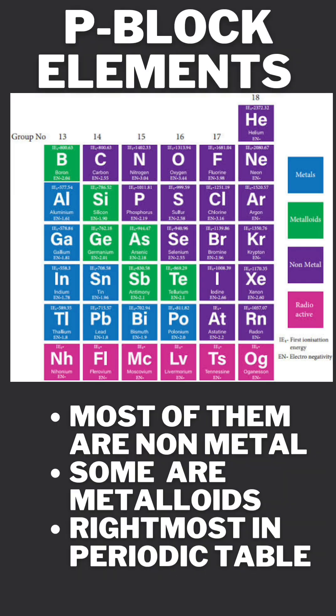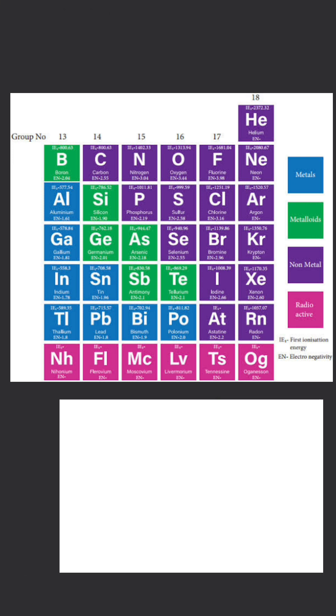The next are the p-block elements. Most of them are non-metals, some are metalloids — here you can see the green colored elements are the metalloids — and a few are metals. They are present on the rightmost side of the periodic table.